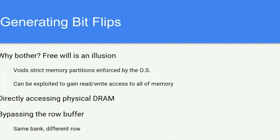In order to access specific rows of a DRAM chip repeatedly, there are two obstacles to overcome. First, we need to bypass the row buffer by selecting two distinct addresses mapped to distinct rows within the same bank. By randomly selecting an address pair X, Y, and using the absolute physical address found in /proc/PID/pagemap, we can determine whether two addresses are mapped to different rows within the same bank. Second, we need to bypass the CPU's cache by evicting the contents of X and Y. On Intel chips, we can use the Cache Flush (CLFLUSH) assembly instruction, while on ARM devices, we can make use of direct memory access.